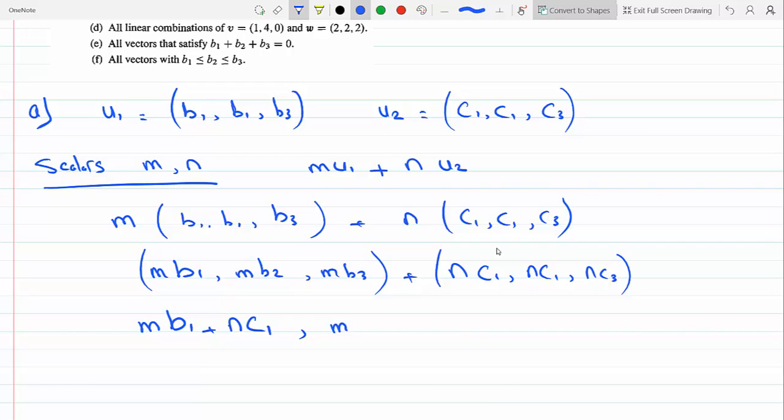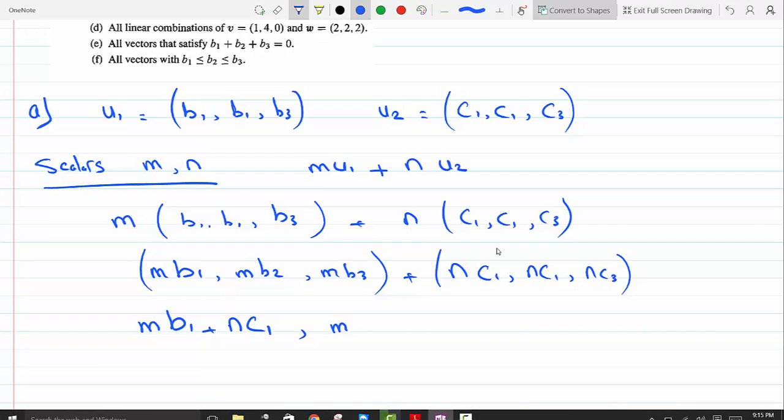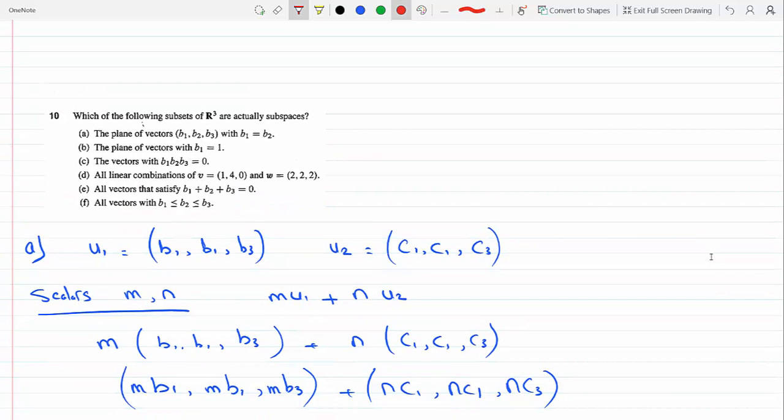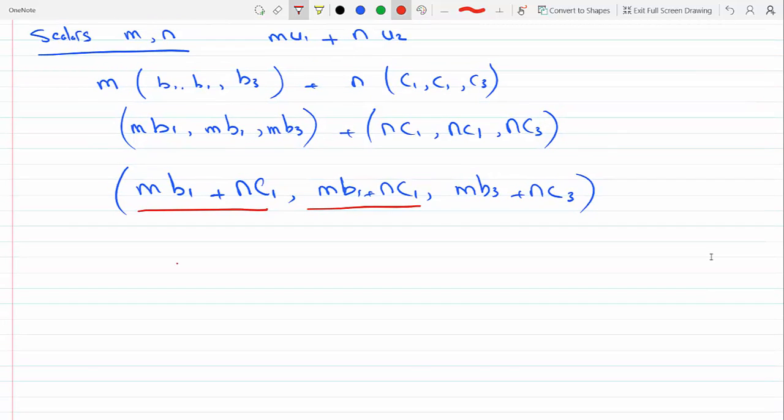The freezer is not working here, it's freezing on me, sorry. Adding the corresponding components, we get M B1 plus N C1, and this here is C1 because they're equal. M B1 plus N C1 and M B3 plus N C3. Well, we can see that these two are the same. So the plane of vectors is a subspace of R³. Therefore, yes, subspace, because it's closed under scalar multiplication and addition.